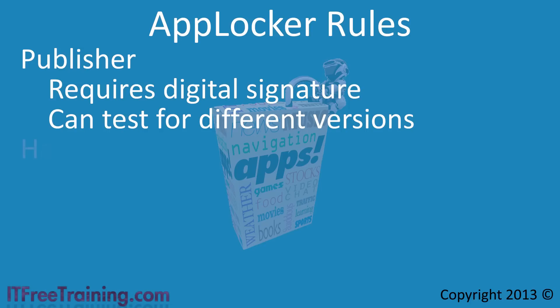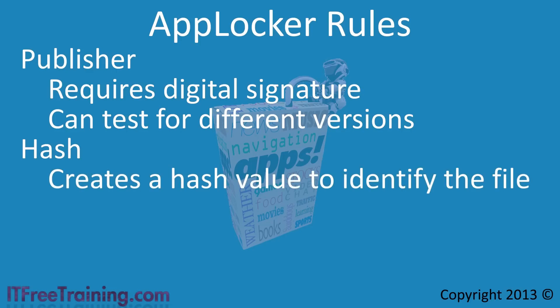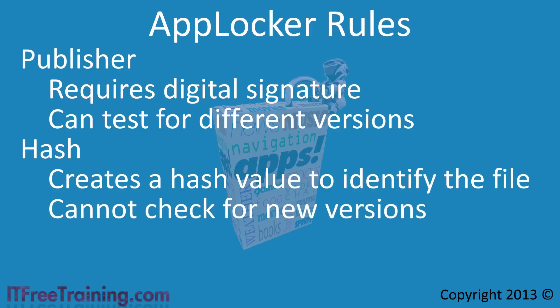The next rule type is a hash rule. This rule creates a hash value of the application to identify it. A hash value is created by a mathematical process which effectively takes a file and reduces it down to one value. When an application is launched, it is checked against the hash value to see if there is a match, and if so the rule is executed. Hash values are a good solution if there is no digital signature, but the problem is that it only takes one bit to change in a file for the hash value to no longer match. This means hash rules cannot check for newer versions, so a new hash rule must be created for each new version.